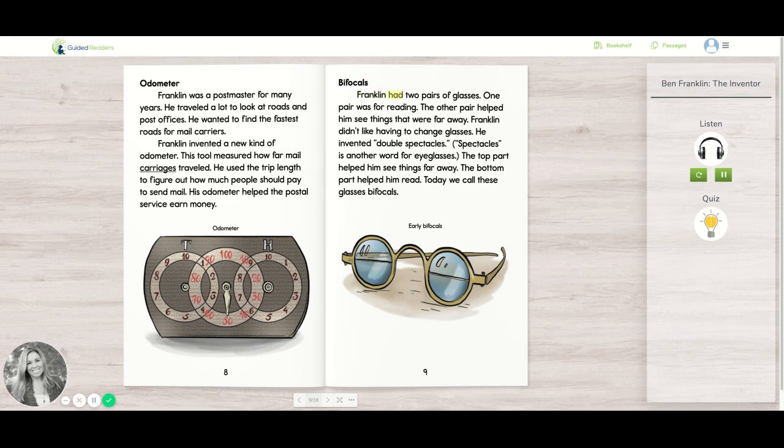Bifocals. Franklin had two pairs of glasses. One pair was for reading. The other pair helped him see things that were far away. Franklin didn't like having to change glasses. He invented double spectacles. Spectacles is another word for eyeglasses.